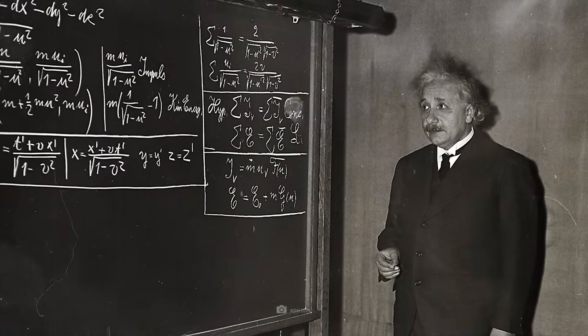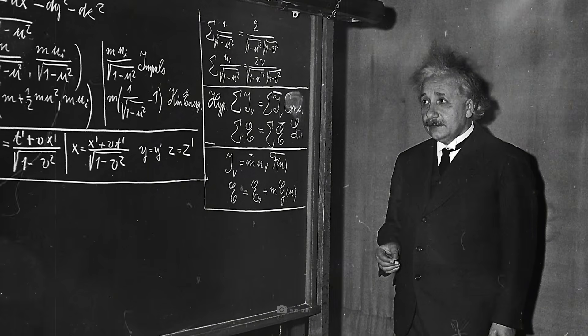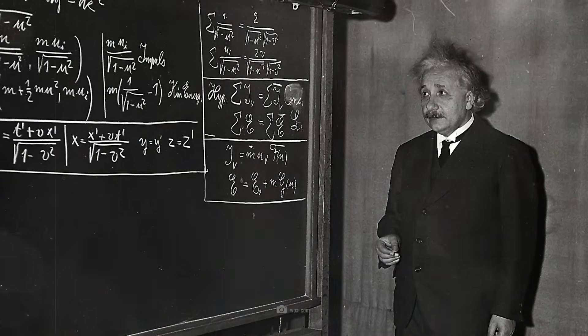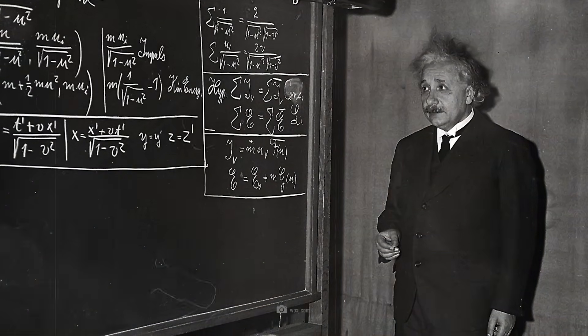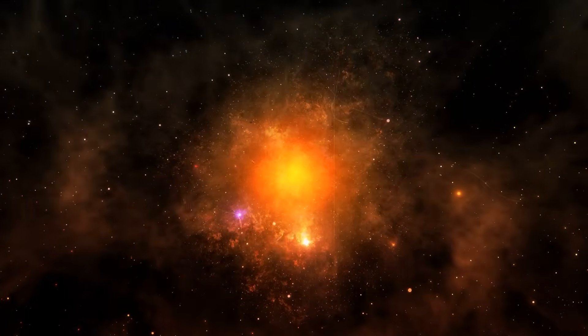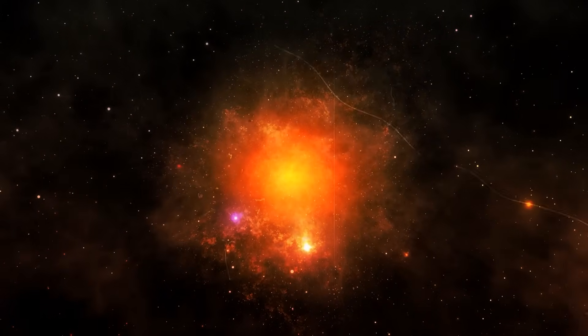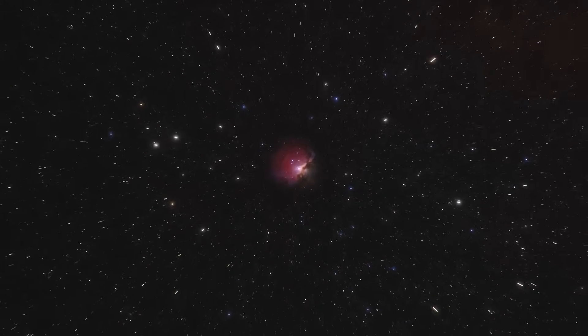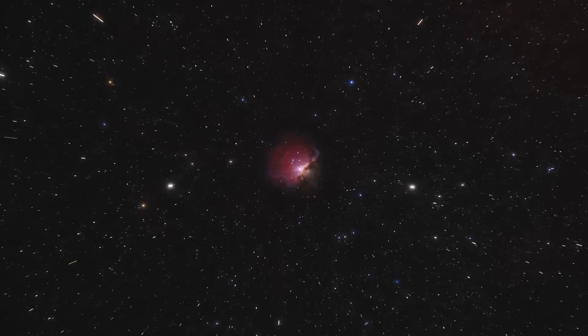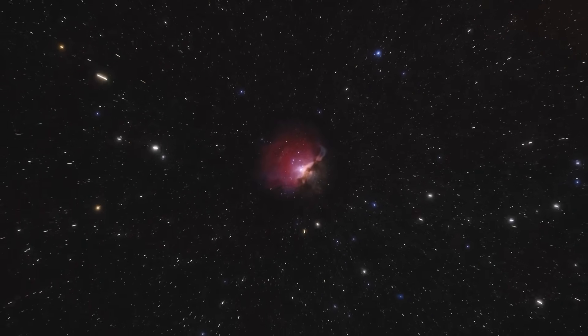Einstein called this the unified field equation, a formula that describes the microcosm and macrocosm in equal measure. This formula must exist, or perhaps said a little better, there must be a bridge between the two. We don't know whether we will ever really be able to physically and mathematically grasp everything that the universe really is.